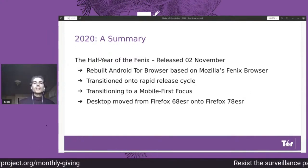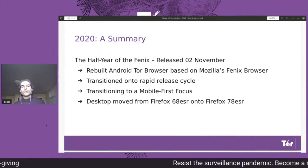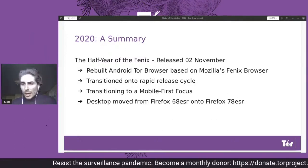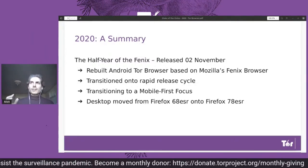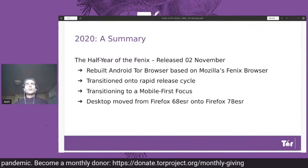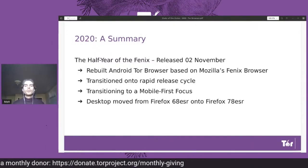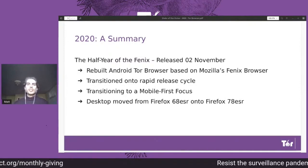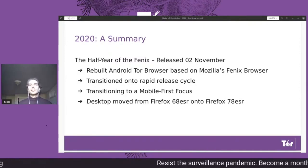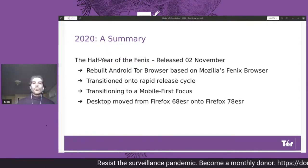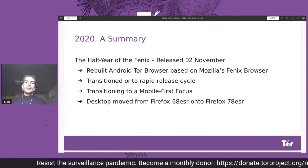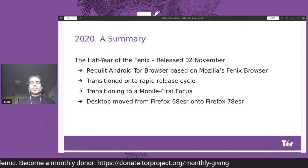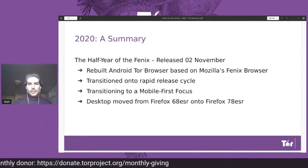Because we are really becoming a mobile-first development team and organization, we've been learning how to safely move from one version of Firefox to the next every single month. This means that Android is actually based on Firefox 83 as of tomorrow, whereas desktop is still based on Firefox 78.